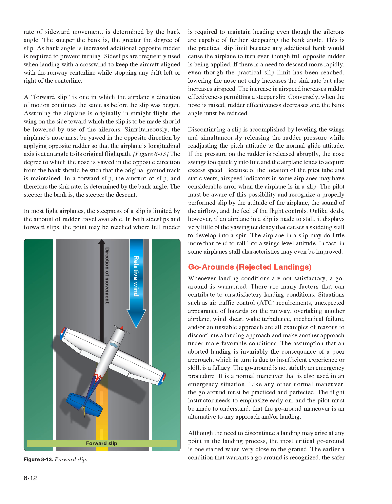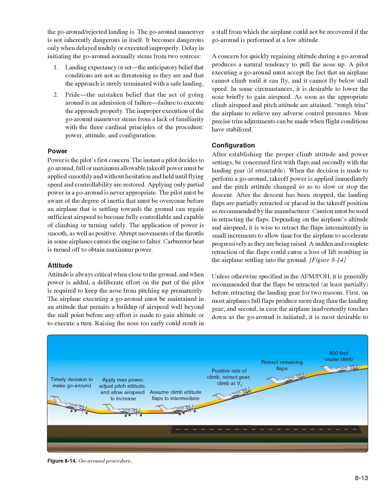Go-Arounds/Rejected Landings. Whenever landing conditions are not satisfactory, a go-around is warranted. Situations such as ATC requirements, unexpected hazards on the runway, overtaking another airplane, wind shear, wake turbulence, mechanical failure, or an unstable approach are all reasons to discontinue a landing approach. The assumption that an aborted landing is invariably the consequence of a poor approach is a fallacy. The go-around is not strictly an emergency procedure—it is a normal maneuver that must be practiced and perfected. The pilot must understand that the go-around is an alternative to any approach and/or landing, and the earlier a condition that warrants a go-around is recognized, the safer the rejected landing.